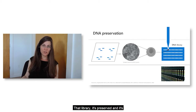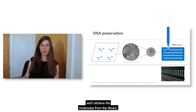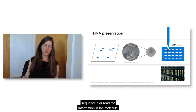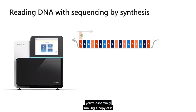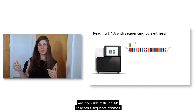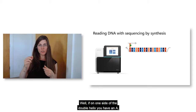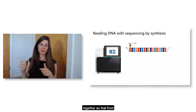The library is stored under the right conditions for the DNA to be stable. When it's time to read the information, we retrieve the molecules and then sequence them. There are multiple ways of sequencing DNA. The most used today is an optical method where reading the DNA essentially involves making a copy of it — a base is added that's complementary to the base in the DNA. DNA is a double helix where on one side if you have an A, on the other side you have a T; if you have a C, on the other side you have a G.